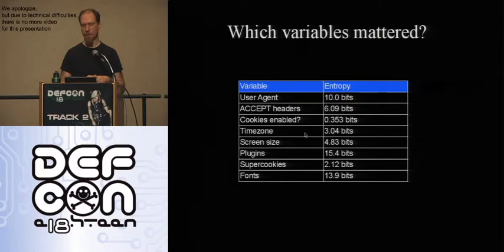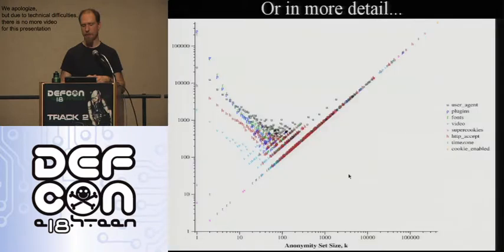The things that your browser publishes are very revealing. If you want to ask what the distribution of different values for all of these things looks like, you end up with this graph. It's in our paper as well.